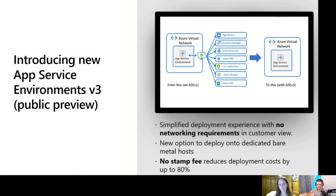ASE v3 is built on top of dv4 hardware. Instead of ASE v2 which had one-core, two-core, and four-core hosts with 3.5 GB, 7 GB, and 14 GB of RAM, we now have two-core, four-core, and eight-core hosts with 8 GB, 16 GB, and 28 GB of RAM. So you can have larger workloads running inside your system, you have more cores available overall, and the system is just more powerful.